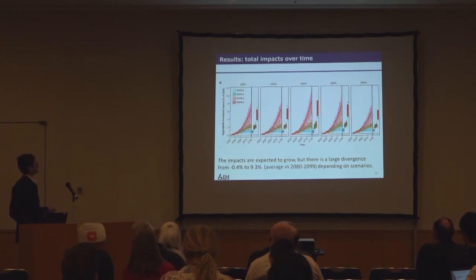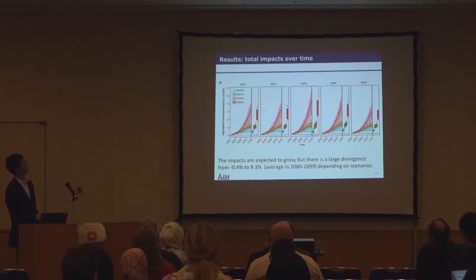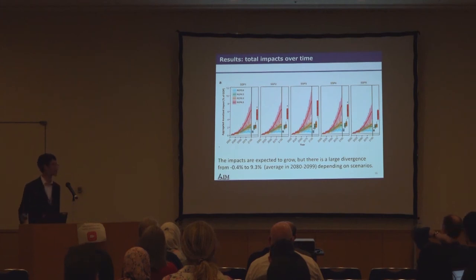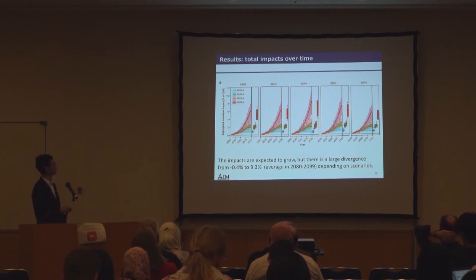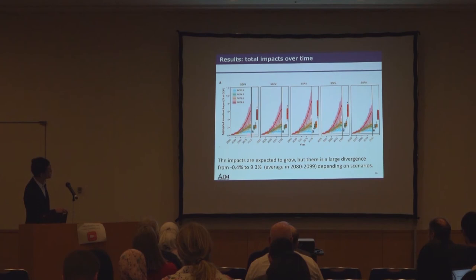Here is the main result — the global total impact associated with multi-sector and multi-scenarios. Generally speaking, we can see a clear tendency across all SSPs that climate change has a large impact at the end of the century — more than five percent, and it can be like 10 percent. If we stabilize the climate like a two-degree target, then it can be very small in every scenario — something like less than one percent. In the worst case, it can be a 10 percent impact, while in SSP 1 it's quite small.